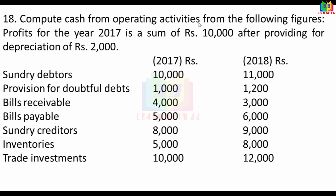Next problem: Compute cash from operating activity from the following figures. Profit for the year 2017 is Rs.10,000 after providing depreciation of Rs.2,000. We will calculate cash from operating activity. Items include sundry debtors, provision for doubtful debts, bills receivable, bills payables, sundry creditors, inventory, and trade investment.